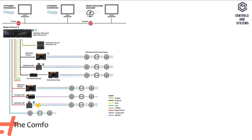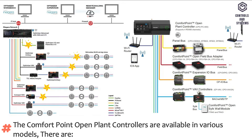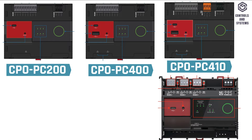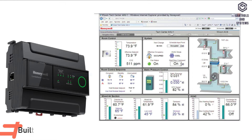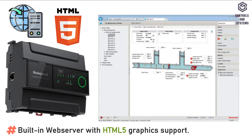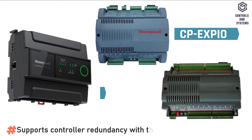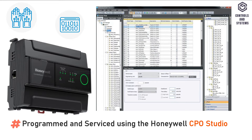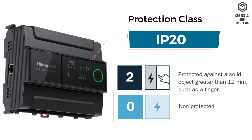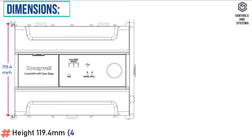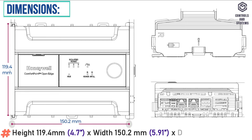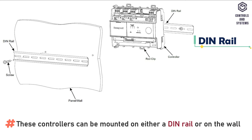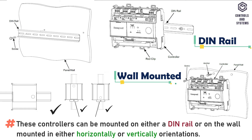Device Overview: The Comfort Point Open Plant Controllers are available in various models — CPO PC200, PC400, PC410, PC500, and PC600. They feature a built-in web server with HTML5 graphics support, support controller redundancy with the CPE XPIO and CPODIO, and are programmed and serviced using the Honeywell CPO Studio Tool Suite. Degree of protection is IP20. Dimensions: height 119.4 mm, width 150.2 mm, depth 60 mm. These controllers can be mounted on a DIN rail or wall-mounted in either horizontal or vertical orientation.